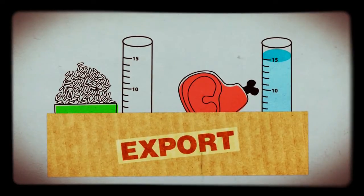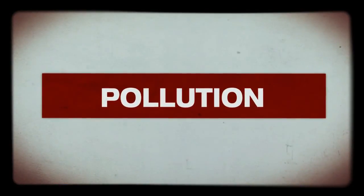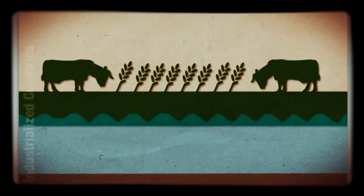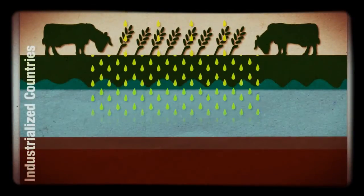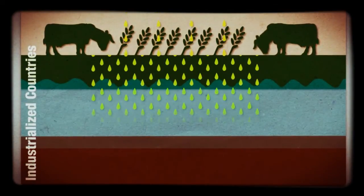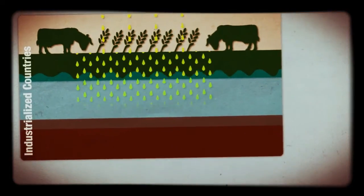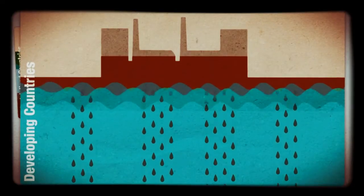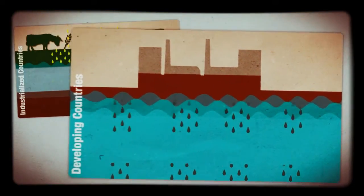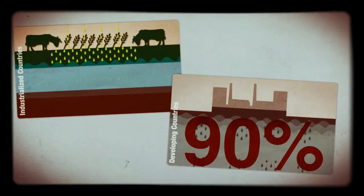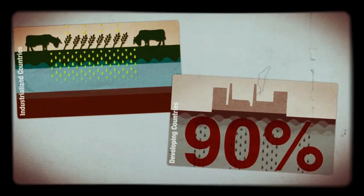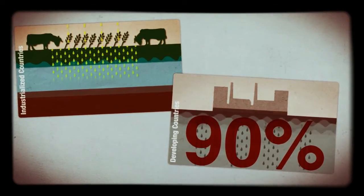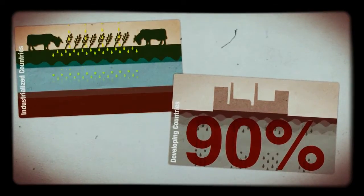Second, water pollution. In industrialized countries, the main problem is agriculture — groundwater quality can be reduced by inputting large quantities of pesticides and chemical fertilizers. In developing and emerging countries, the absence of any wastewater management is usually critical. In developing countries, 90% of urban wastewater pours untreated into rivers, lakes, or the sea.